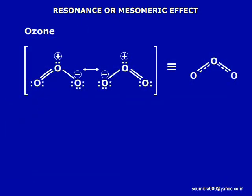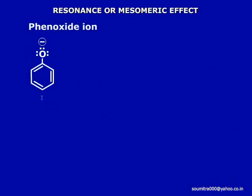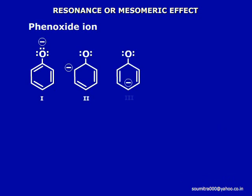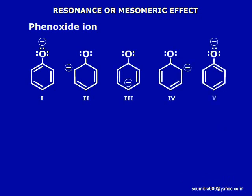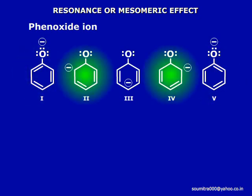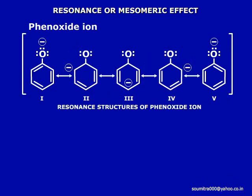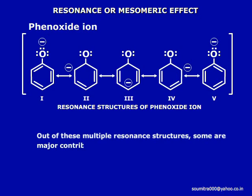Now, in the case of ozone, the two resonance structures are equivalent with the same energy. In the following example, the resonance structures of phenoxide ions are shown. Structure 1 and 5 are equivalent structures. Structure 2 and 4 are also equivalent structures. But all of them together are not equivalent. Out of these multiple resonance structures, some are major contributors and some are minor contributors.